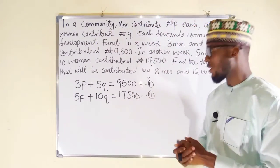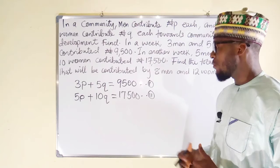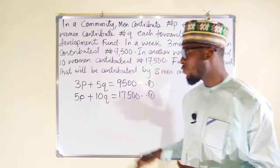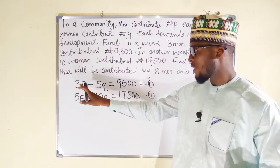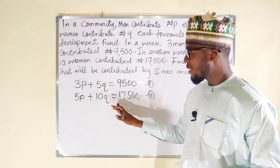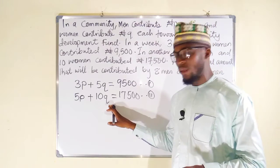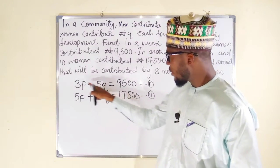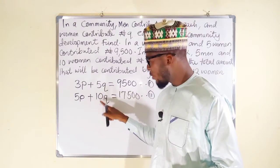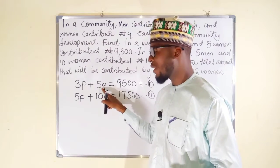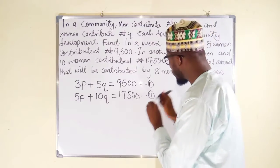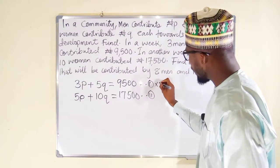We can solve this system by substitution, elimination, or graphical methods, but we are going to apply the elimination method. We will eliminate one of the variables — either P or Q. Eliminating Q is simpler because we can multiply equation one by two in order to get 10Q in both equations, so we can then subtract them out.